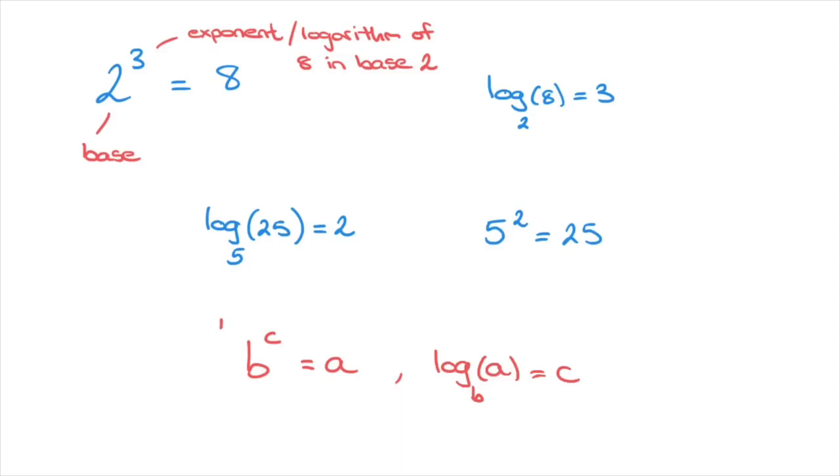Now, these two statements are completely equivalent and can be read from left to right or from right to left. On the left-hand side, this is known as the exponential form. And on the right-hand side, it's known as the logarithmic form. They're both saying the same thing, though. That is, the power to which we need to raise the base b for it to equal a is c.